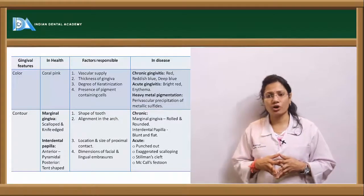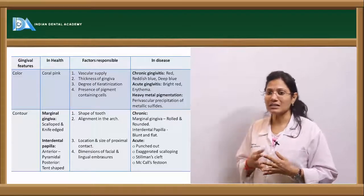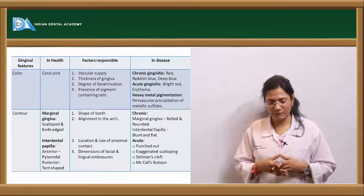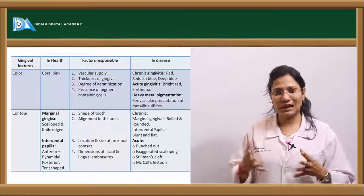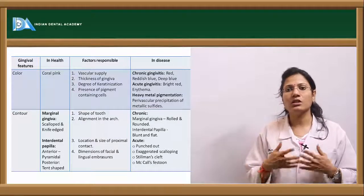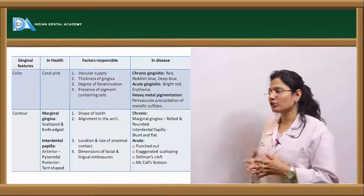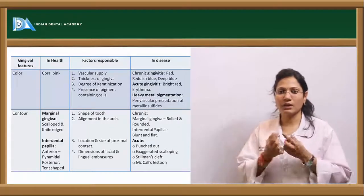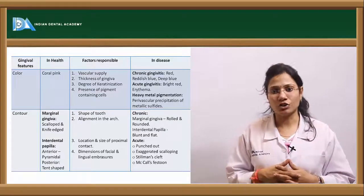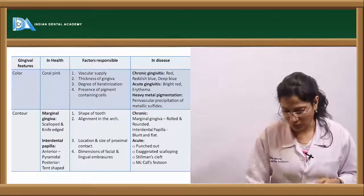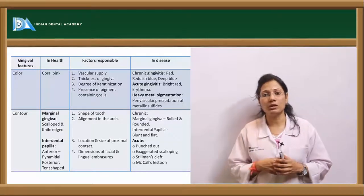Other alterations in contour include McCall's festoons and Stillman's clefts. Stillman's clefts are apostrophe-shaped clefts present within the gingival margin. McCall's festoons are a life-preserver-shaped kind of gingival enlargement seen especially in the canine and premolar areas.